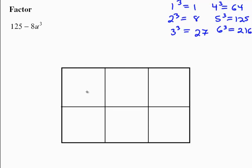In this case we have 125 and negative 8u cubed. These are perfect cubes, which means that instead of having two rows and two columns, we're going to have two rows and three columns because this is degree 3. These two terms are going to be like terms and cancel out because we don't see anything in the middle, and these two will also cancel out.